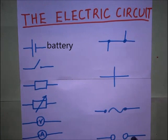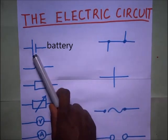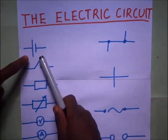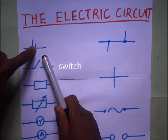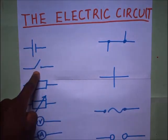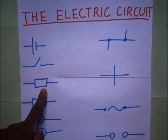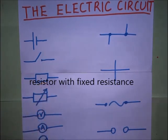This symbol stands for a battery. The long dash meaning it's the positive terminal of the battery, the short one is the negative terminal. This stands for a switch in a circuit. This stands for a resistor of fixed resistance.